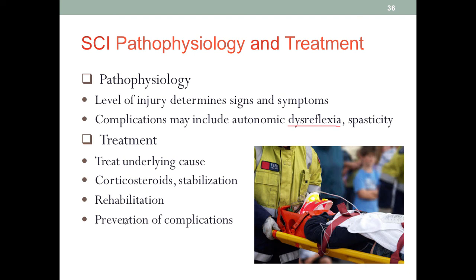Rehabilitation is the key. Unfortunately, this type of neurological injury — SCI — is often permanent, so patients really need to learn how to adapt and be able to function. Although certain functions may be partially regained, neurons do not regenerate. Once they're damaged, unfortunately, they're gone.